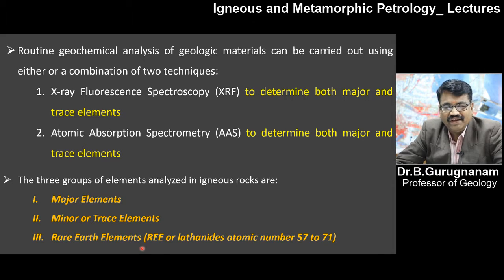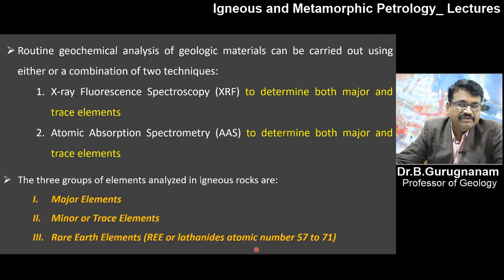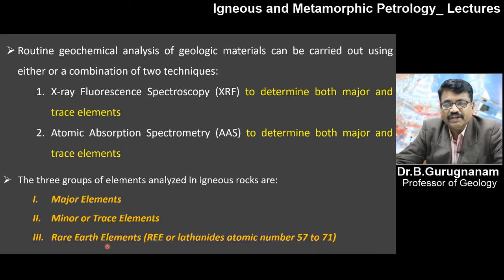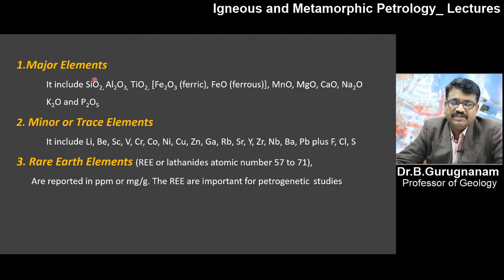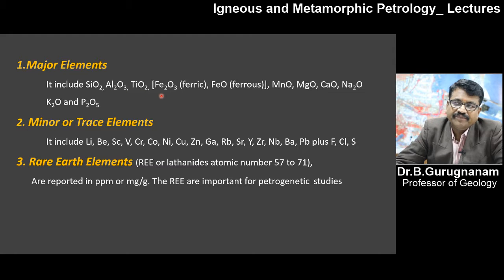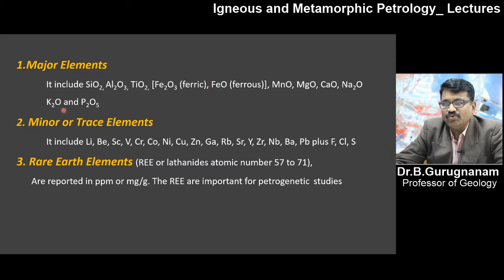Rare earth elements — also called lanthanides with atomic numbers between 57 to 71 — are grouped as REE and must be taken into account for assessing rock type. Major elements include silicon dioxide, aluminum oxide, titanium oxide, ferric oxide, ferrous oxide, manganese oxide, magnesium oxide, calcium oxide, sodium oxide, potassium oxide, and P2O5. All these are categorized as major elements because their contribution is significant in forming the rock type.